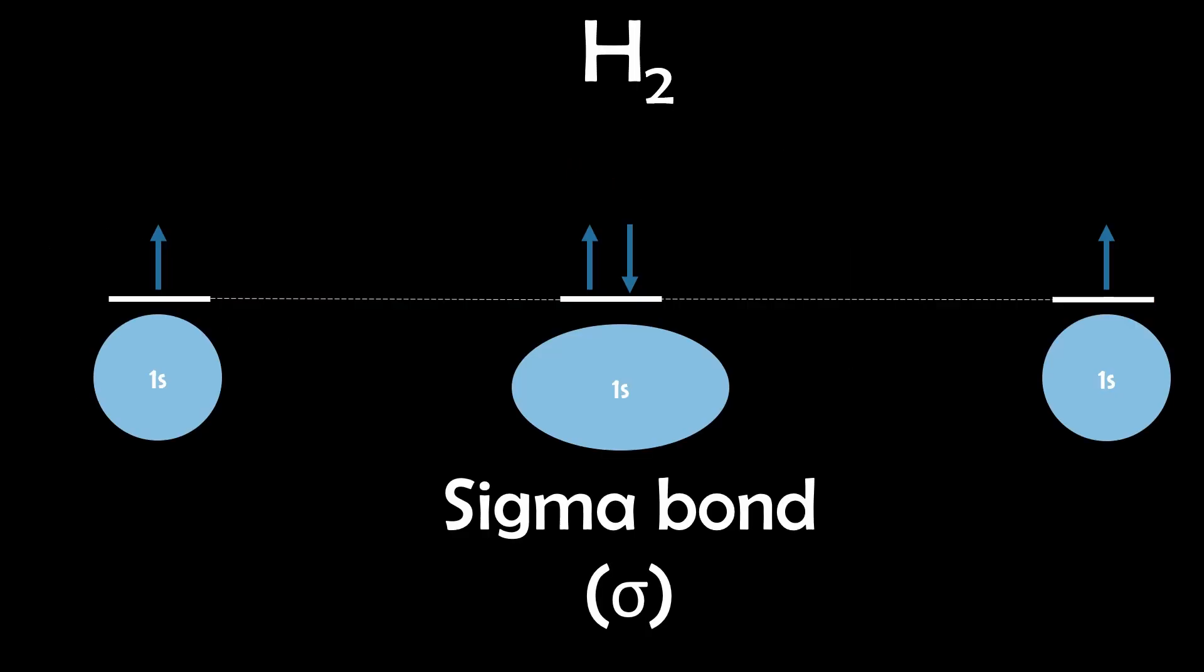So let's use the simplest example, dihydrogen. Each hydrogen atom has one electron in its 1s orbital. When two hydrogen atoms come together, their 1s orbitals overlap to form a sigma bond, which is a direct overlap of orbitals.